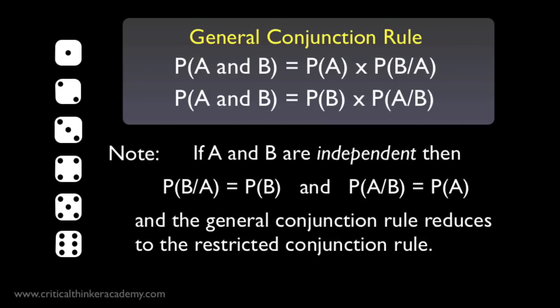To sum up, this is the general conjunction rule, written here in two forms depending on which you choose as the conditional probability term. They're equivalent formulations and will give you the same answers. Notice also how this rule reduces to the restricted conjunction rule when A and B are independent. In that case, following our definition of probabilistic independence, the conditional probabilities just reduce to the unconditional probabilities, and you recover the simple restricted rule.